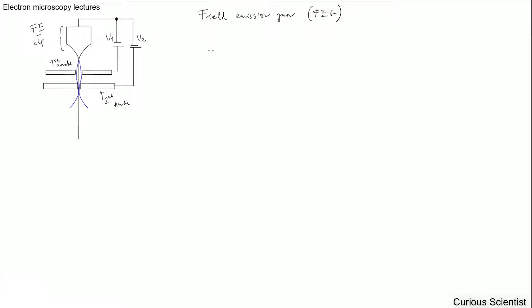And we have quite high voltages here. So the first anode, which is V1, is only around 3 kV. But V2, the second, is easily around 100 kV. So you can already see that the applied voltages around the tip are already higher than for the other types of guns.